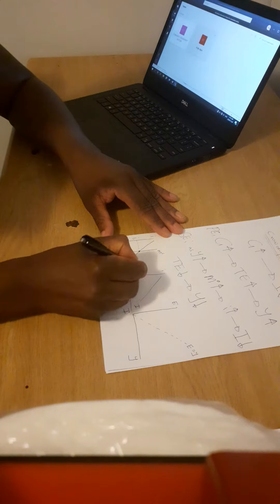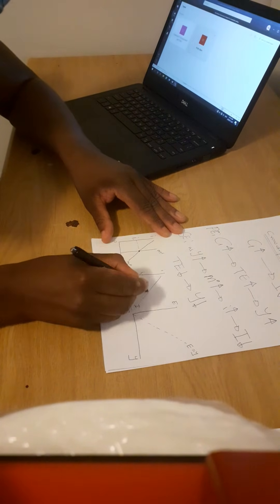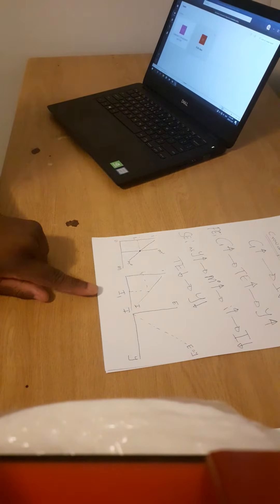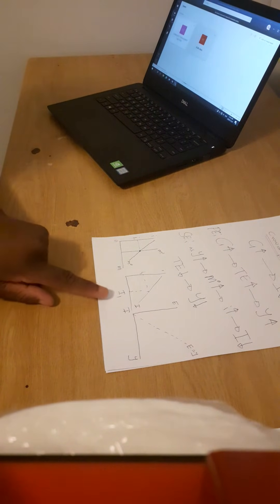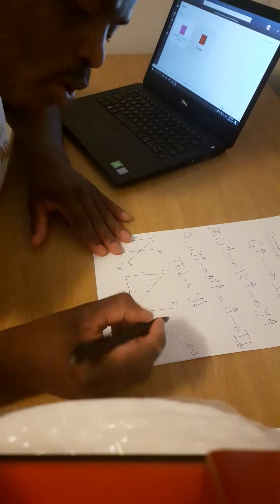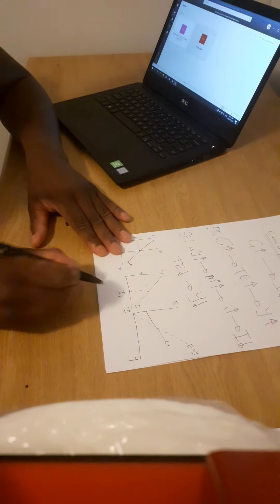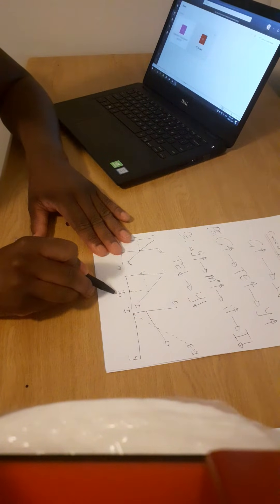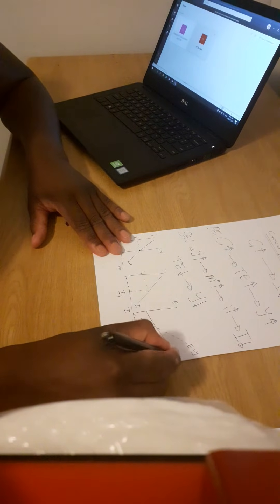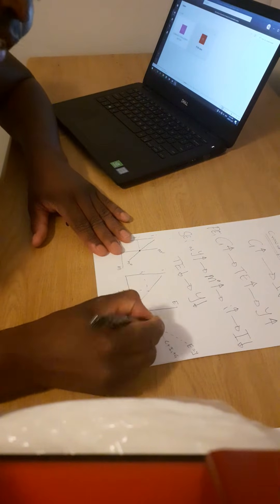The money supply function is a vertical line and the money demand function slopes downward. Where these two intersect we get the market interest rate, r1. From that interest rate r1 we read off the investment curve to get investment level I1. With I1, we draw the total expenditure line as C plus I1 plus G, and we find the equilibrium output Y1.